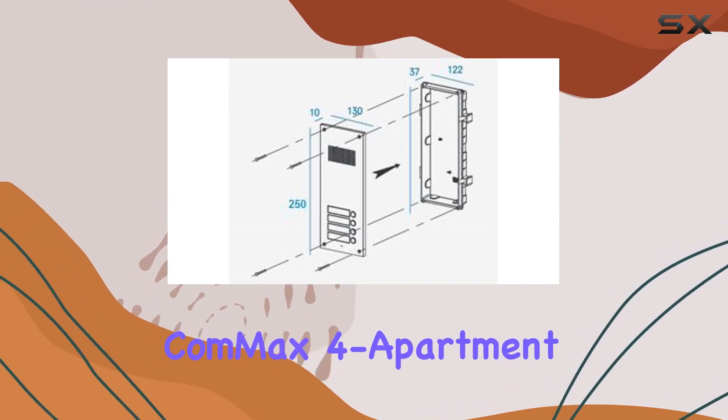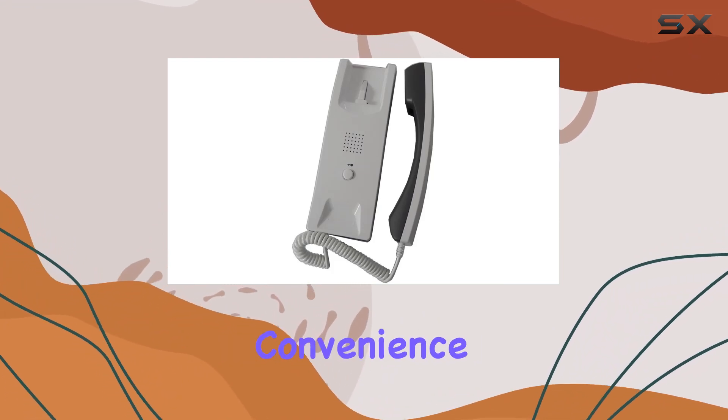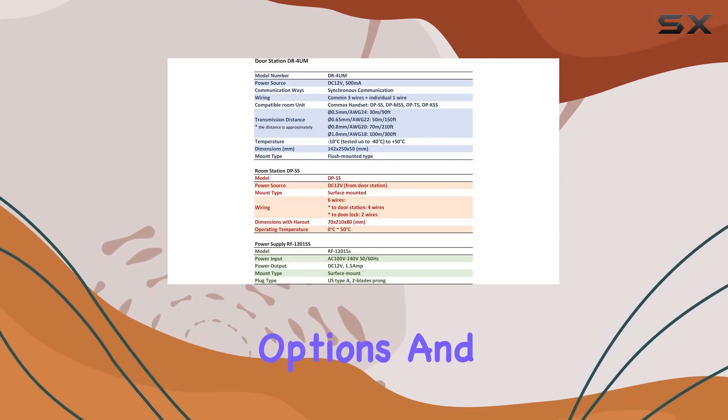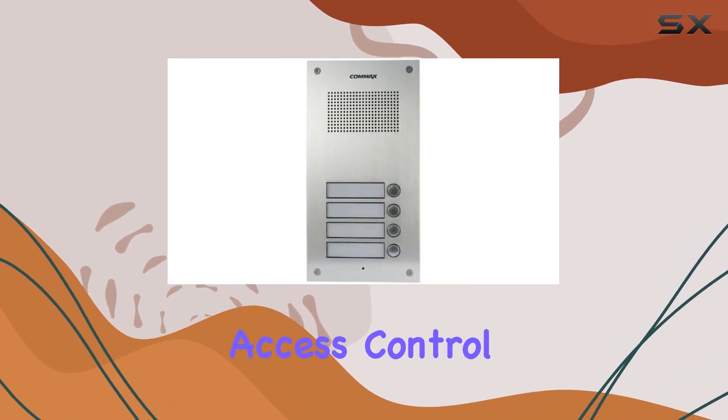Overall, the ComMax 4 apartment building audio intercom set excels in enhancing security and convenience for multi-apartment buildings. Its sturdy construction, easy installation options, and reliable performance make it a top choice for those looking to upgrade their building's access control.